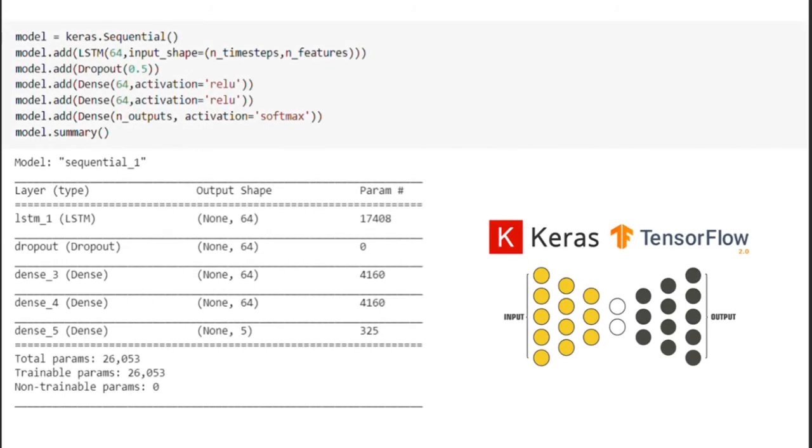The Keras library was used to build the model. The model uses a LSTM layer as input. The dropout layer is a regularization technique to reduce the complexity of the model to prevent overfitting. Two dense layers which are the deeply connected neural network and one additional dense layer as output.